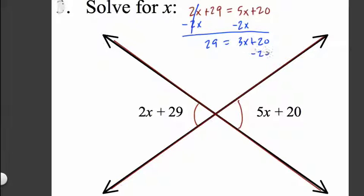We subtract 20 from both sides, and now we get 9 is equal to 3x, divide both sides by 3, and x equals 3. And that's our answer.